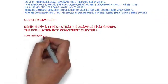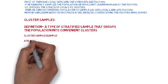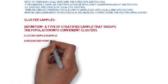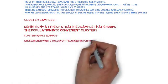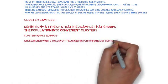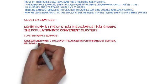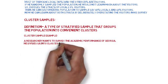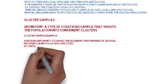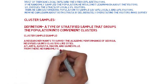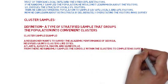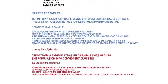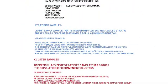Cluster Example: A researcher wants to survey the academic performance of Georgia. He divides Georgia into clusters like cities — Atlanta, Augusta, Macon, and Gainesville. From there, he randomly samples the schools within the clusters to complete his survey.